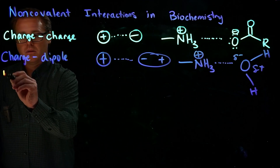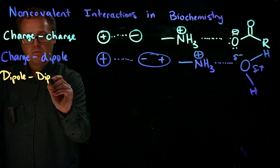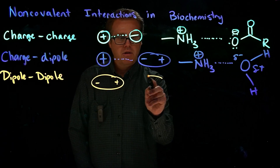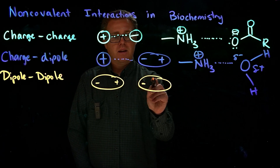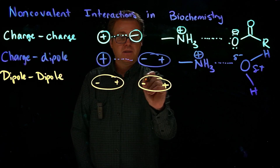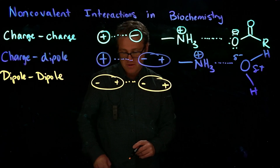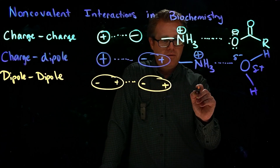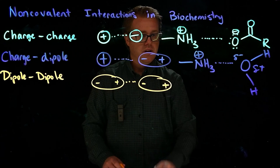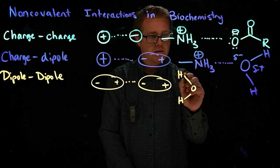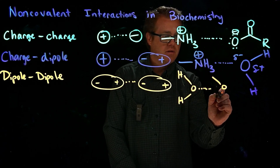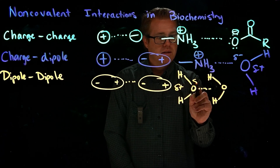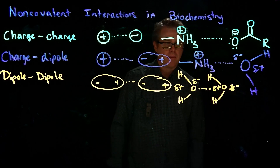Next is dipole-dipole interaction: one molecule has a dipole (positive and negative sides), and another molecule also has a dipole. They orient so that the positive side of one faces the negative side of the other, creating a favorable interaction. The example I discussed at the beginning of the video — two water molecules interacting — is a dipole-dipole interaction. Water in biochemistry is so critical that we'll spend a whole chapter on how water interacts with biomolecules.